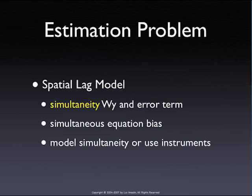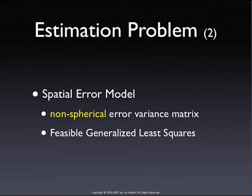The problem is very different for the spatial error situation, which, as we saw yesterday, is primarily a problem of precision. This is simply a special case of what is referred to in econometrics as a non-spherical error variance matrix — non-spherical meaning not being diagonal and not being a constant term in the diagonal. So anything that is heteroscedastic and spatially correlated would be non-spherical.